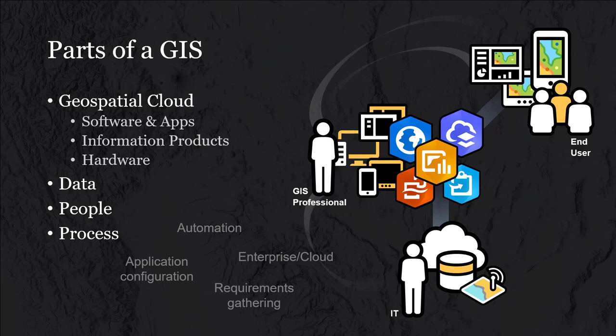I wanted to mention a couple of key areas of GIS that are really important: automation, application configuration, enterprise cloud, and requirements gathering. We've already talked about enterprise cloud — the point is that a lot of the data is not just sitting on a desktop computer. It's hosted and pulled from multiple different sources across the web.